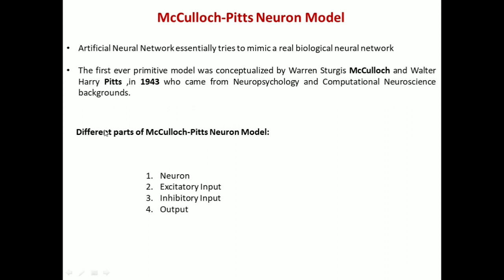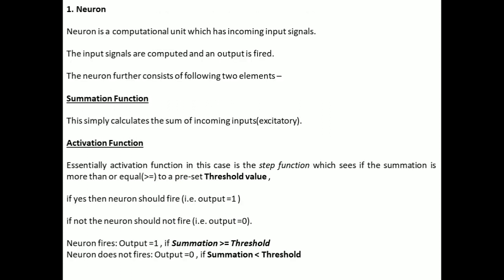Let us now see the different parts of the McCullough-Pitts Neuron Model. There are basically four different types of parts. The first one is Neuron, the second one is Excitatory Input, the third one is Inhibitory Input, and the fourth one is Output. Let us now see about each and every part in detail.